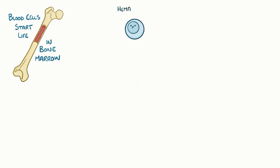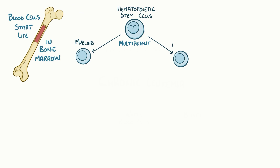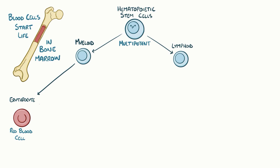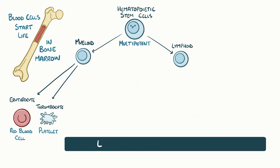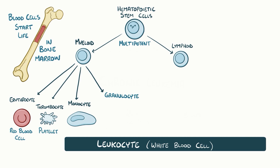Every blood cell starts its life in the bone marrow as a hematopoietic stem cell. Hematopoietic stem cells are multipotent, meaning that they can give rise to both myeloid or lymphoid blood cells. If a hematopoietic stem cell develops into a myeloid cell, it'll mature into an erythrocyte or red blood cell, a thrombocyte or platelet, or a leukocyte or white blood cell, like a monocyte or granulocyte.